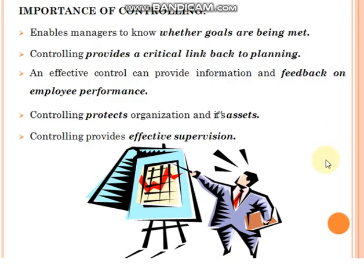Controlling is about supervising everything in a company — it may be a goal, persons, or anything. It is effective supervision. Based on the supervision, we get input on whether the goals are met, whether planning is going rightly or needs to be corrected. It shows each and every employee's performance and protects the organization.